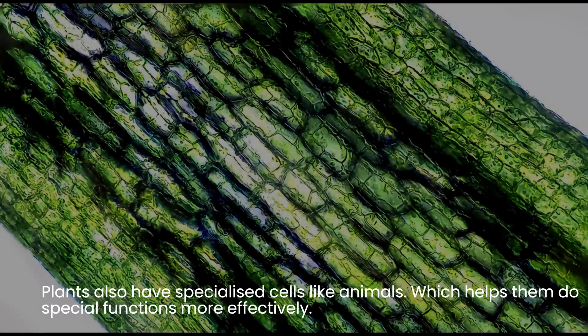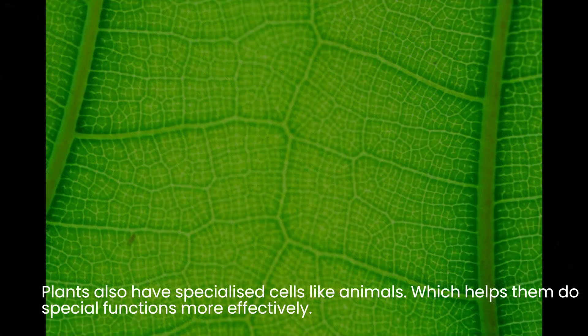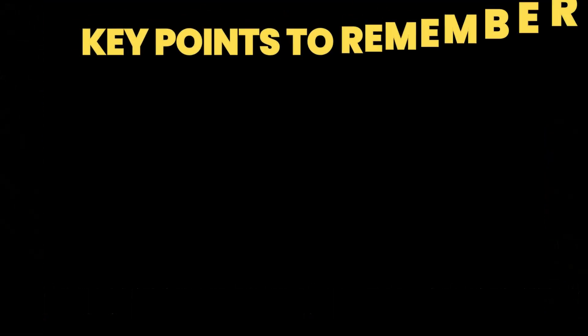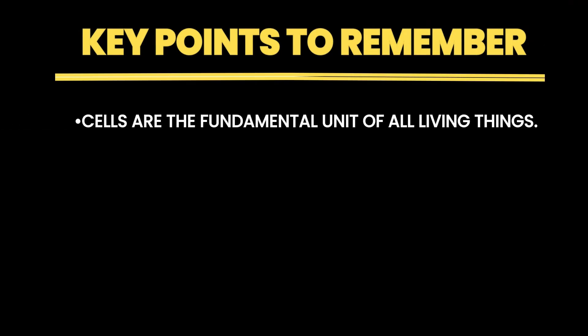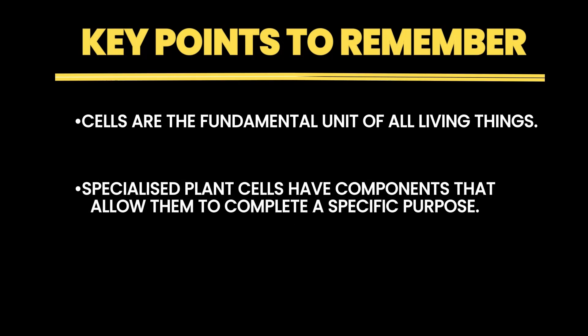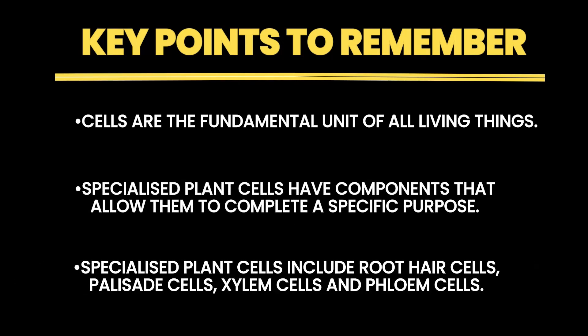Plants also have specialized cells, like animals, which help them perform special functions more effectively. Key points to remember: cells are the fundamental unit of all living things, and specialized plant cells have components that allow them to complete a specific purpose. Specialized plant cells include root hair cells, palisade cells, xylem cells, and phloem cells.